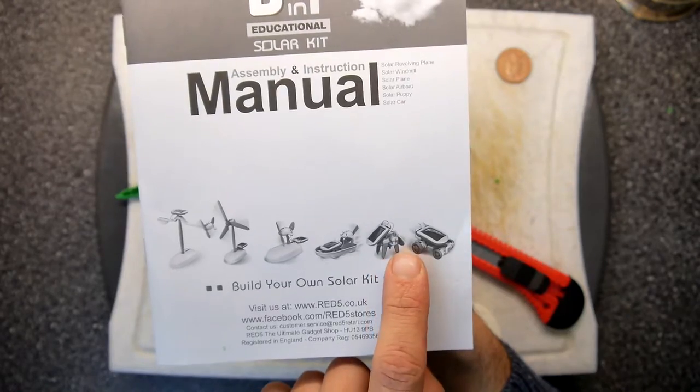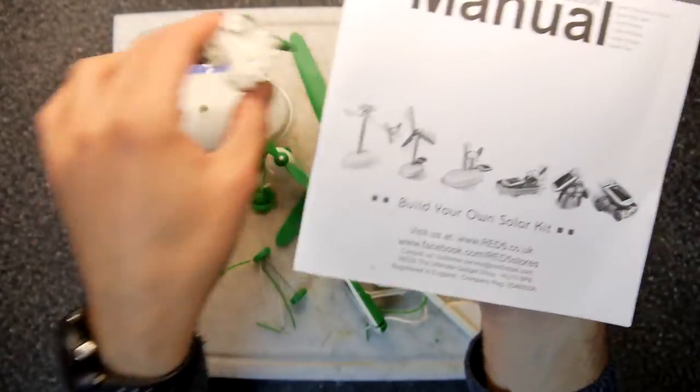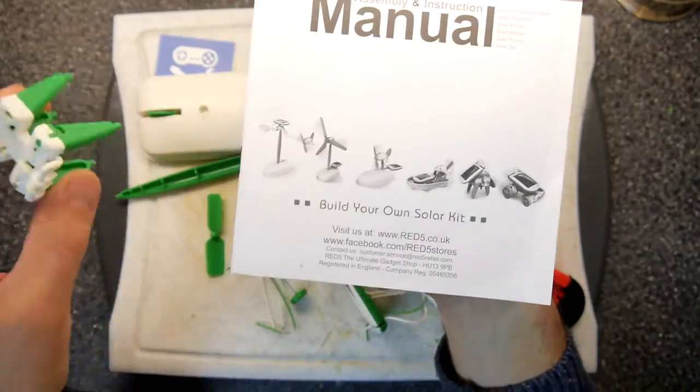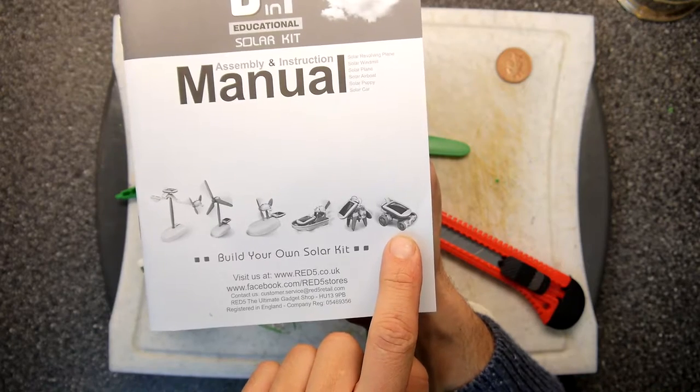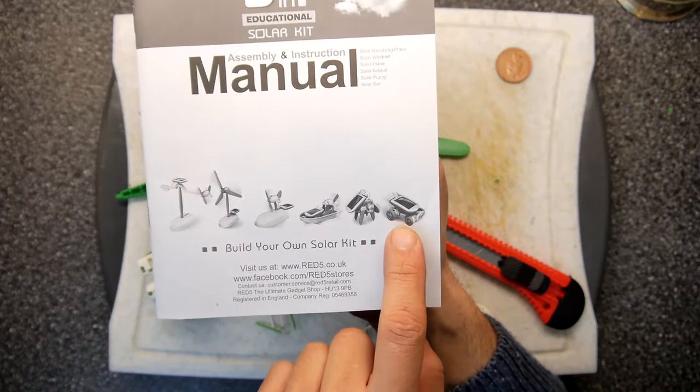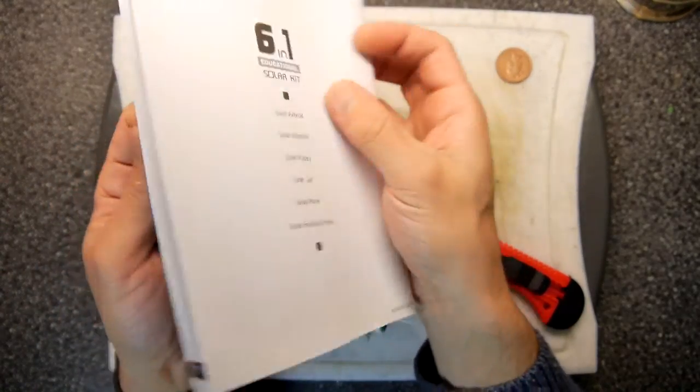An airboat kit, a sort of rocking dog which uses the rudder from the airplane as the tail and it just sort of goes meh meh meh, that's about as much as I can describe it. And then a car which looks kind of funky but doesn't really drive because again we don't have enough sun in the UK to be able to power the gearbox. I guess if you're in a real hot country with loads of sun you're going to get some joy out of this.